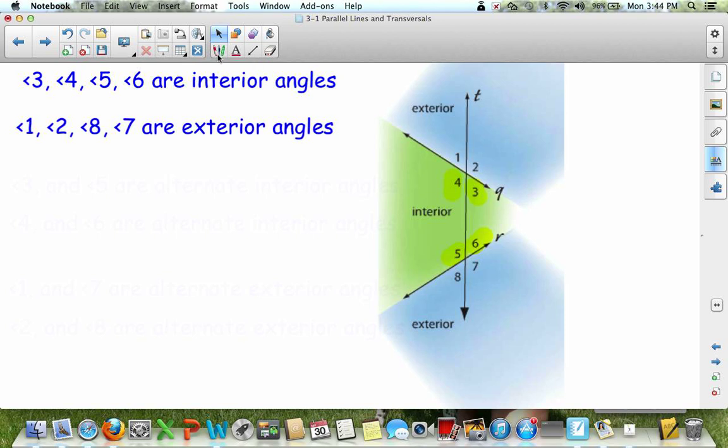Next, we have the exterior angles, which are 1, 2, 8, and 7. They are all on the outside in the exterior space. So they are the exterior angles.